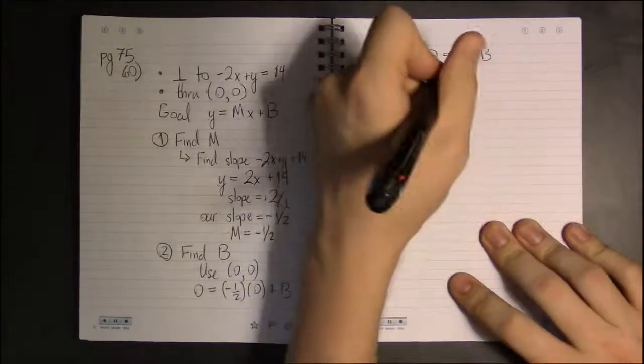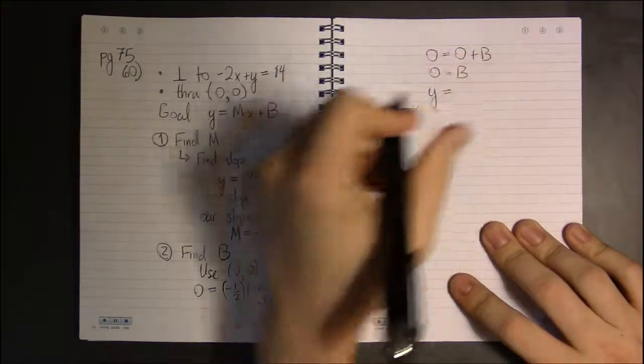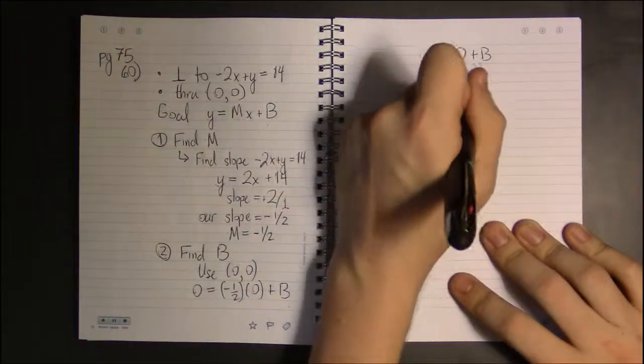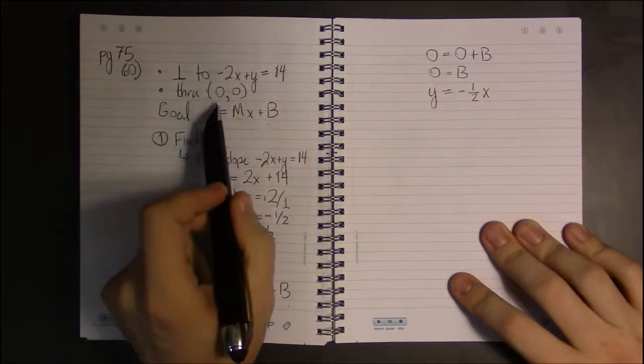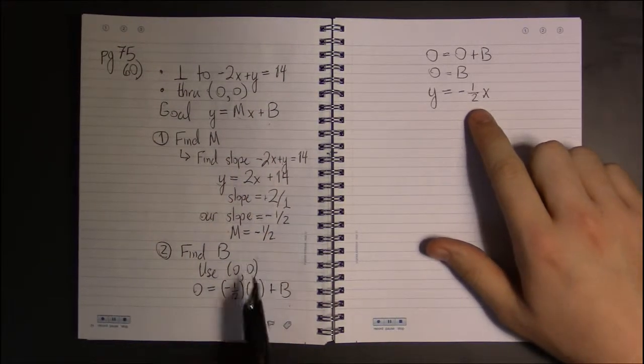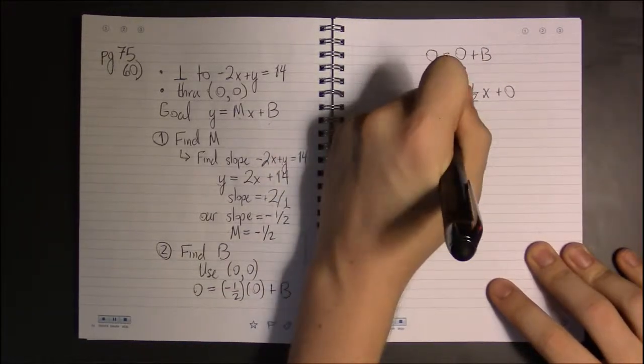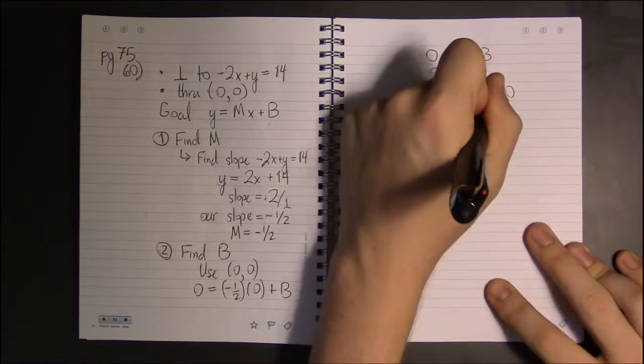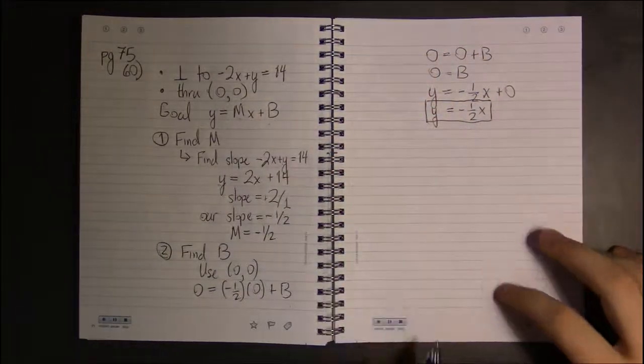So our line, the line that is perpendicular to -2x + y = 14 and which passes through the origin, is simply the line y = -1/2x + 0. But adding 0 never changes anything, so we can just write our answer in the following way.